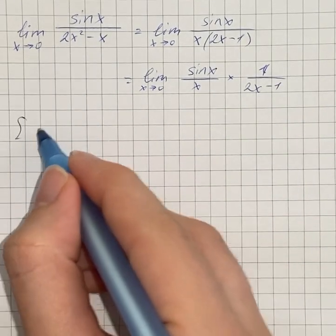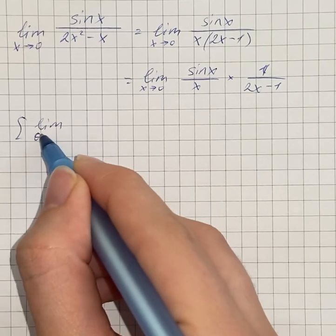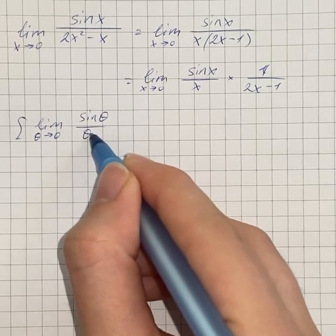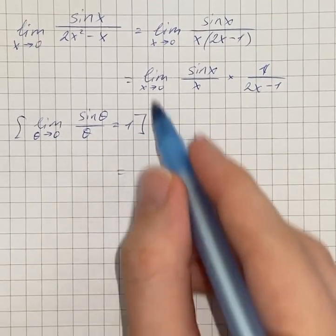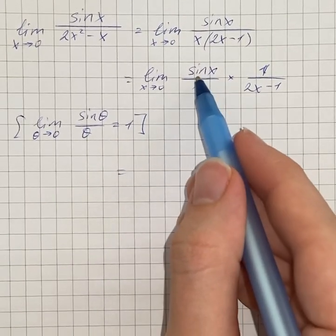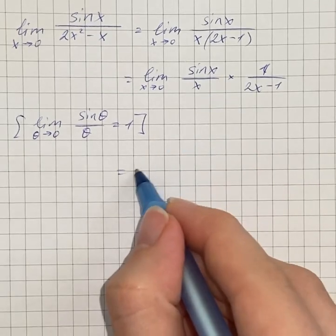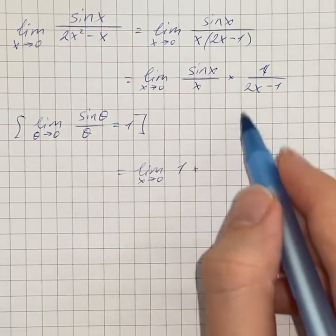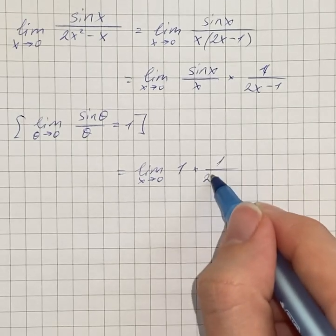We're going to use that limit as theta approaches 0 of sine of theta over theta equals 1. Therefore limit as x approaches 0 of sine of x over x also equals 1, and then multiply by 1 over 2x minus 1.